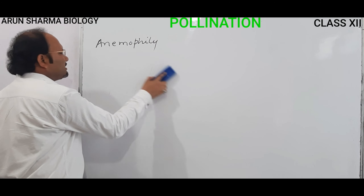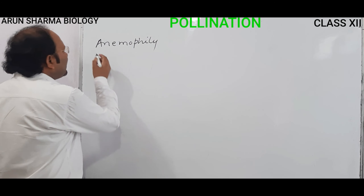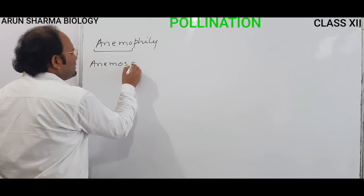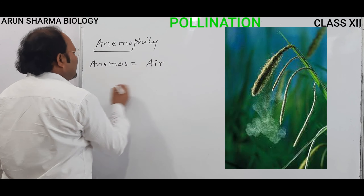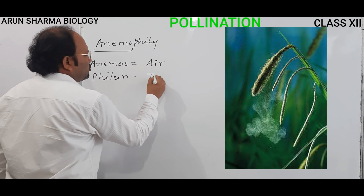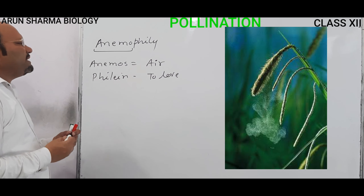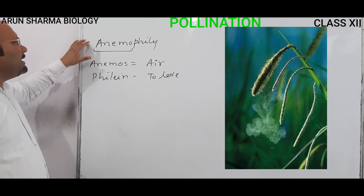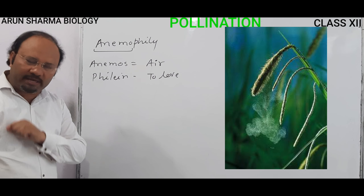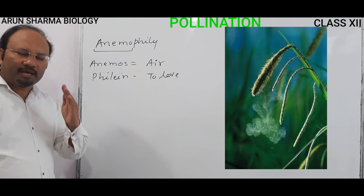First of all, we are taking the example of anemophily. The word 'anemo' means air, and 'philean' means to love, to attract. This is the basic meaning of anemophily — a type of pollination where the agent is air. The pollination process is executed with the help of air.